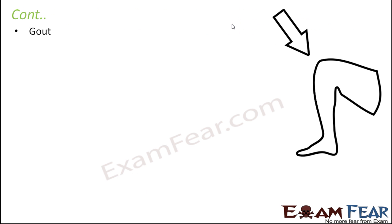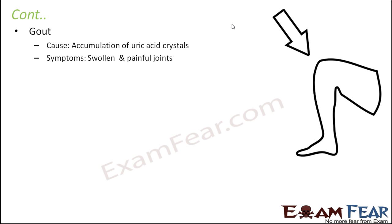The next disorder is gout. Gout is again an inflammation of joints which happens due to accumulation of uric acid crystals. As I mentioned when discussing the excretory system, urea, uric acid, and ammonia should all be expelled from the body. But if uric acid gets accumulated in your joints, it can lead to swelling of joints and extreme pain at the joints. That is gout.